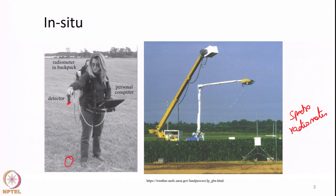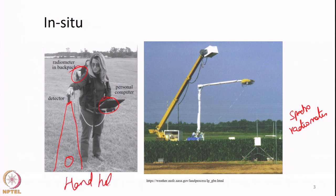This handheld instrument is called a spectral radiometer, which is useful to collect the spectral reflectance curve of land surface objects. It has a computer and a backpack which contains the actual control unit and everything. It will observe the earth or whatever target source within a small solid angle, similar to how a satellite based sensor observes. We can use it as a reference for various applications. This is an example of a handheld sensor where the sensor is held in a human hand.